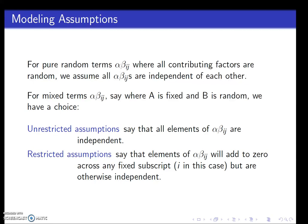But then we also have our restricted model, where some of those elements of the interaction terms, the alpha betas, are going to add to zero across any fixed subscript. In our case, A is fixed, so it would be the i subscript in this case.